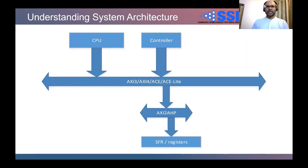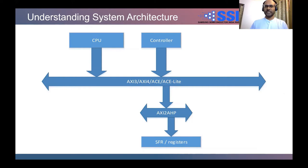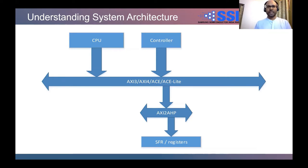Understanding system architecture: I have depicted a very simple form of a system containing a CPU, a controller — which can be any controller like DRAM controller, PCI controller, GPU, or ISP — and then the main bus or bus fabric, which could support AXI3, AXI4, AXI-Lite, or any protocol. It will interface with the register sets of that controller through a slower interface or bus fabric, which is an AXI to APB or AHB converter.